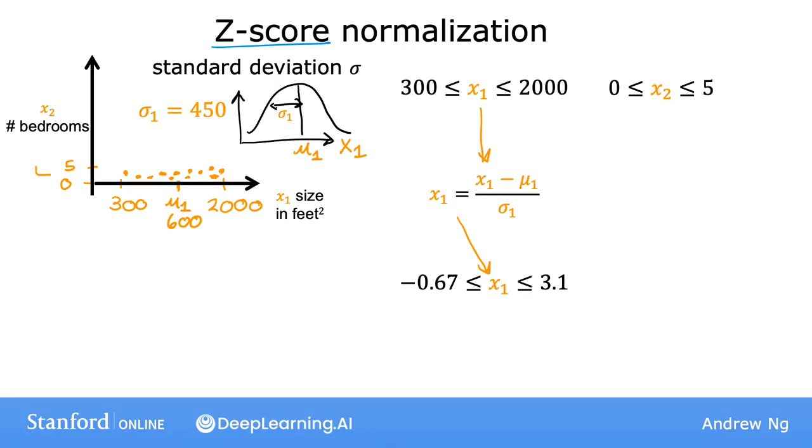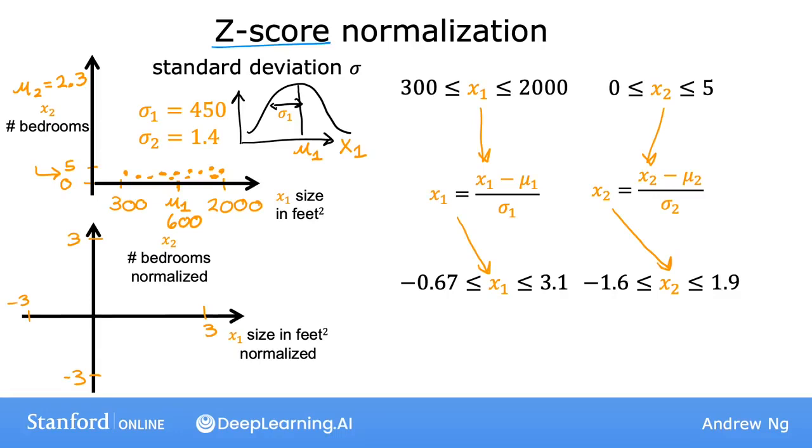Similarly, if you calculate the second feature's standard deviation to be 1.4 and mean to be 2.3, then you can compute x2 minus mu2 divided by sigma2. And in this case, the z-score normalized x2 might now range from negative 1.6 to 1.9. So if you plot the training data on the normalized x1 and x2 on a graph, it might look like this.